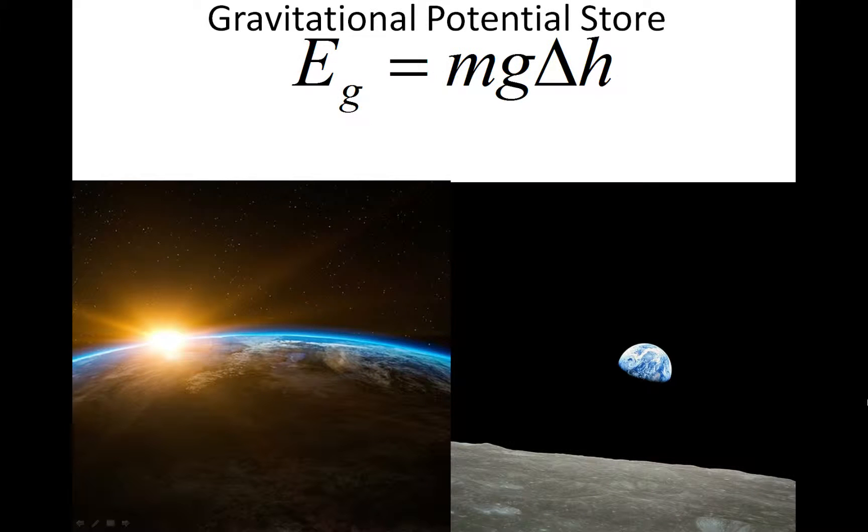Next we have g, the gravitational field strength. On the left we have the Earth, and on the right we have the Moon. On Earth, the gravitational field strength is around 9.8 N per kg, whereas on the Moon it is around 1.6 N per kg.